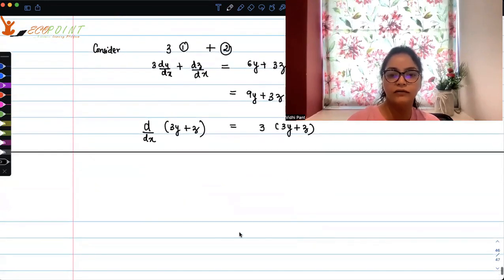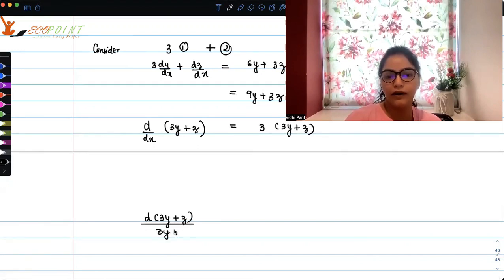So if you observe what you have here is, on integrating, what you get is d of 3y plus z upon 3y plus z. The integral of this is equal to the integral of 3dx.